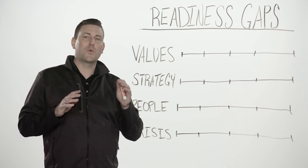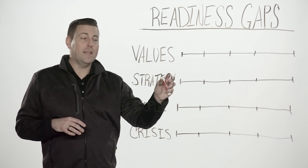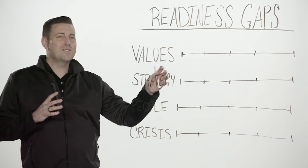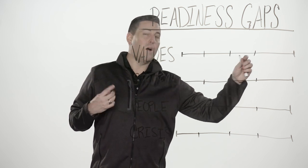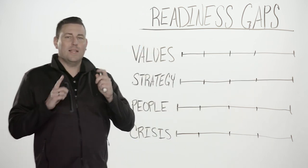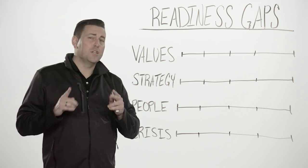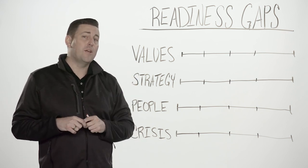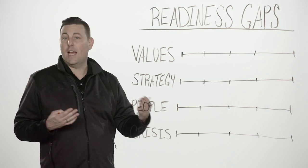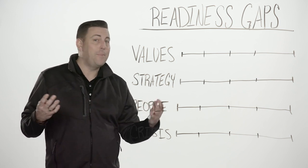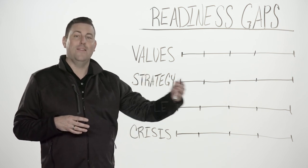The first thing you want to do is rate a person's actions in each category as rarely, sometimes, most always, or always. Let's take a look at values first. What value-based judgment calls have you seen this leader make over the last year? Are they able to articulate the values of your church? Do they have a passion for your vision? Do their decisions align with those vision and values?